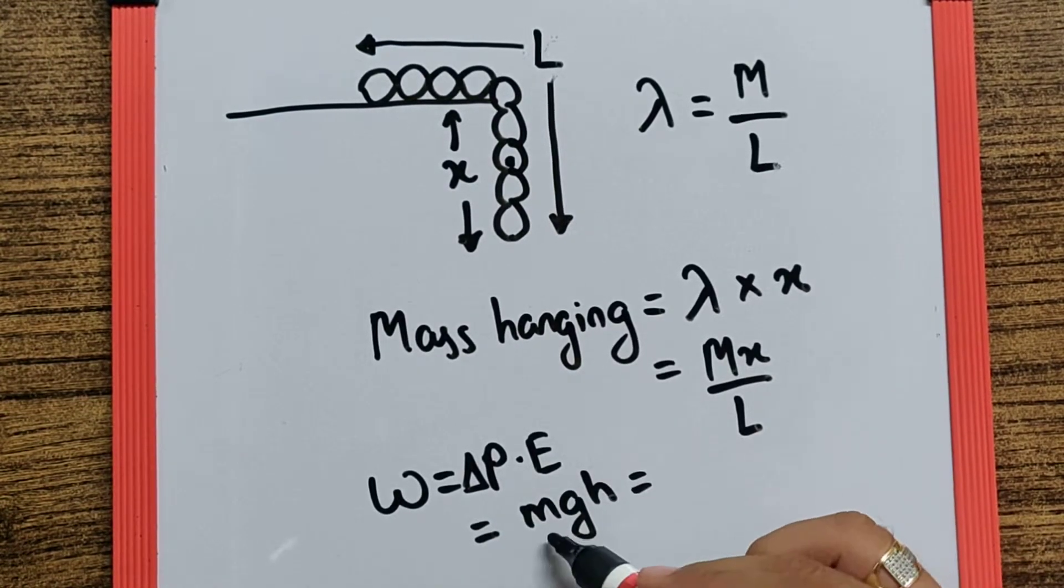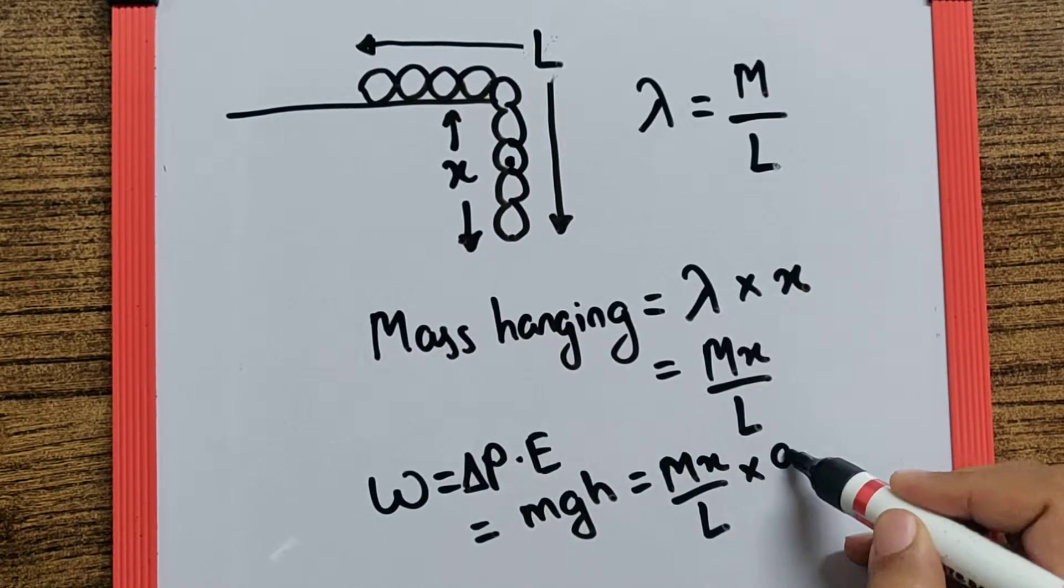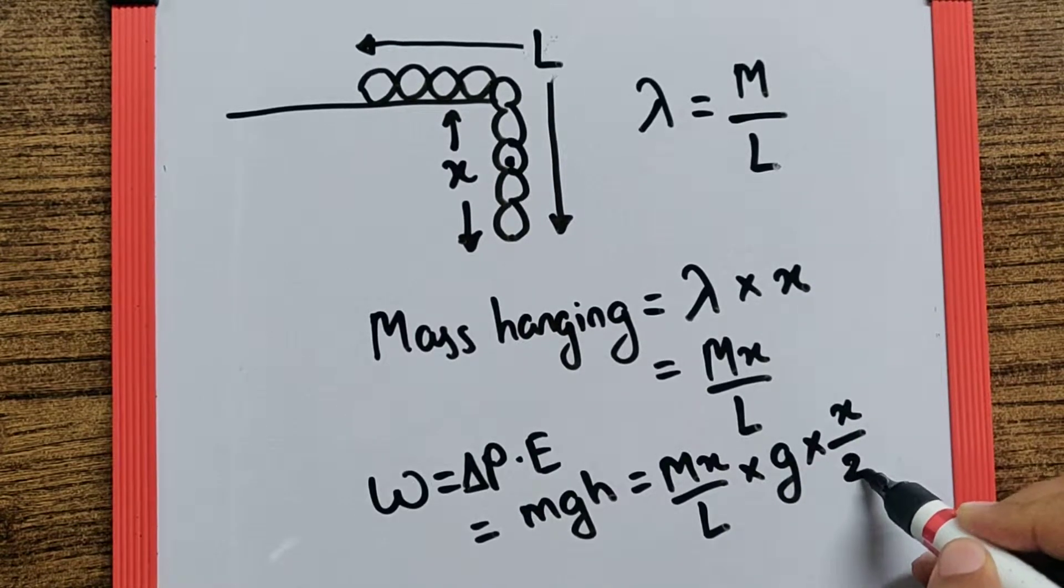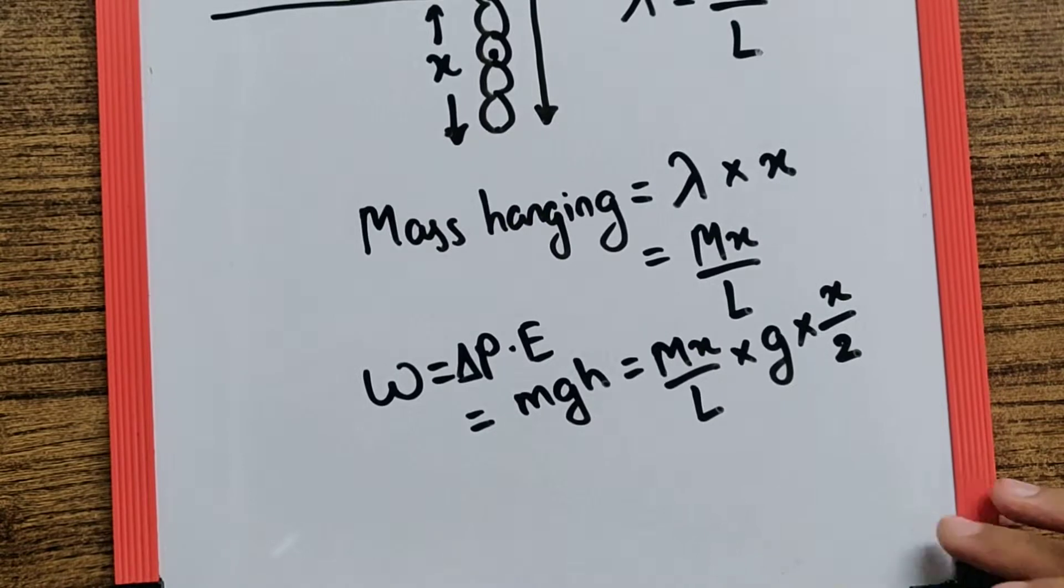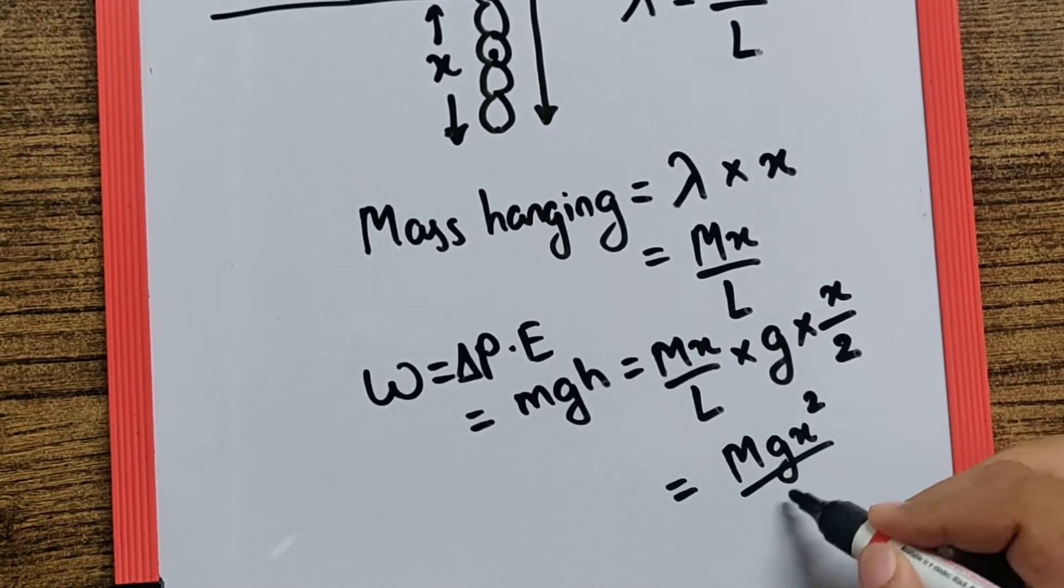But here M which is the mass hanging is MX by L, G remains as it is, whereas H is X by 2. That makes the final equation as M G X square by 2L.